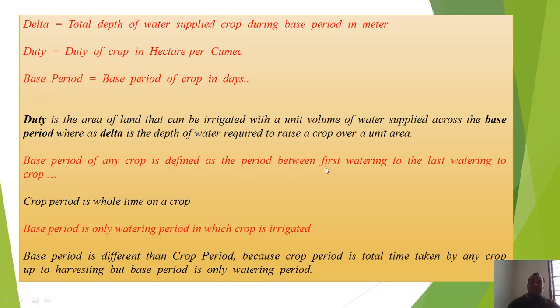Base period of any crop is defined as the period between first watering to the last watering to the crop. Crop period is the whole time required to grow the crop.